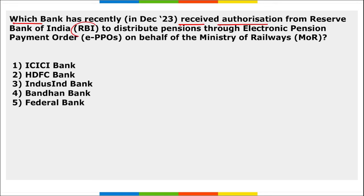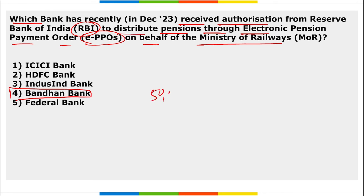Next: which bank has recently received RBI authorization to distribute pensions through Electronic Pension Payment Order (EPPO) on behalf of the Ministry of Railways? It is Bandhan Bank. The bank will be able to provide pension services to around 50,000 retirees each year across 17 zonal offices and 8 production units of Indian Railways.